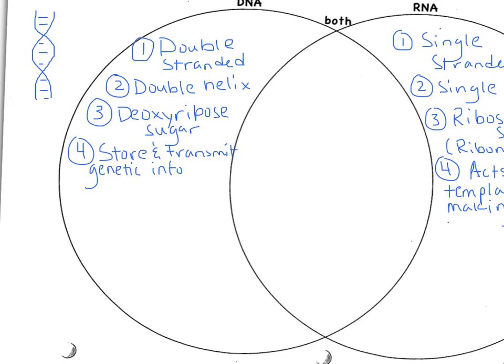All right. When we're talking about nitrogen bases, remember that DNA has adenine, thymine, guanine, and cytosine. And the difference in DNA and RNA is that DNA adenine bonds with thymine.